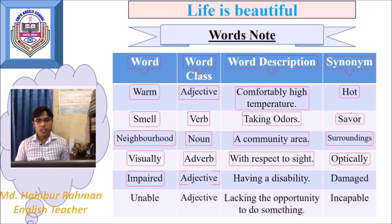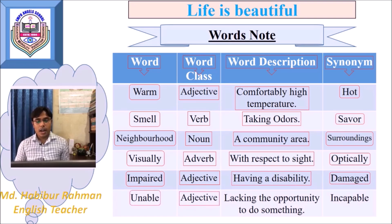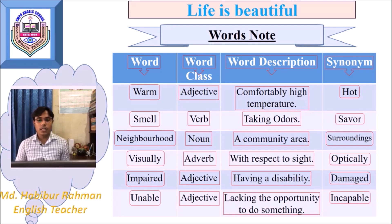Impaired — it's an adjective. Impaired means having a disability. Damaged is a synonym. Unable — unable is an adjective. Unable means lacking the opportunity or capacity to do something, and incapable is a synonym for the word unable.